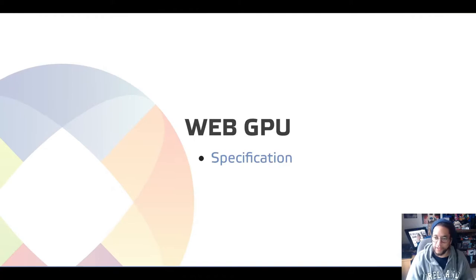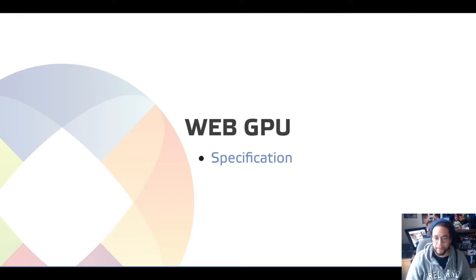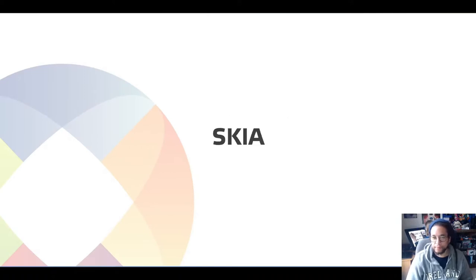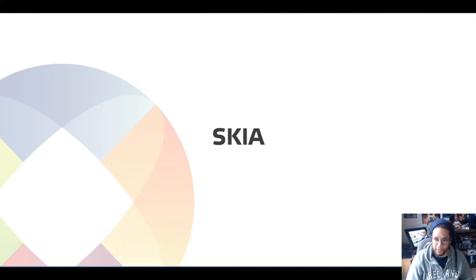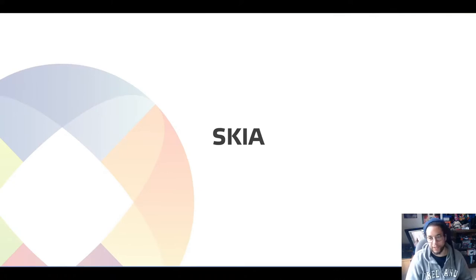WebGPU is an evolving standard that aims to provide a low-level graphics API like Vulkan or Metal to the web. It's already supported in Firefox and Chromium, and supported by WebKit in the Apple ports, so it would be good to support it in the GTK and WPE backends as well. Skia is a 2D vector rendering engine similar to Cairo, which is what we currently use. Initial conversations have happened around the idea of replacing Cairo with Skia, though this may be superseded by the new graphics pipeline. Replacing Cairo with Skia would likely provide performance benefits, as Cairo is largely unmaintained at this point.